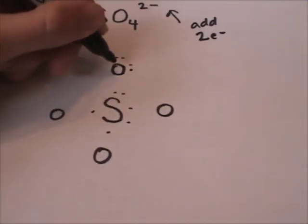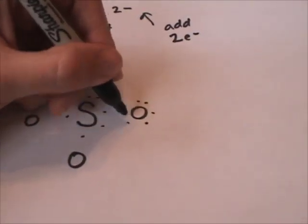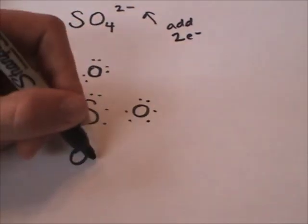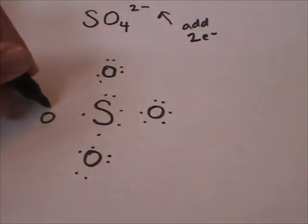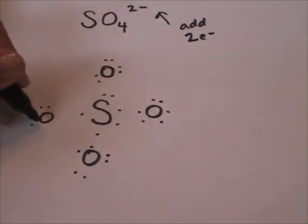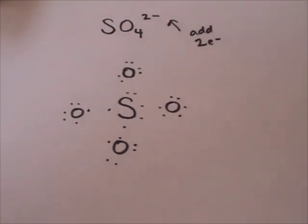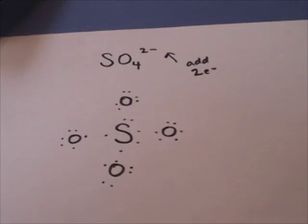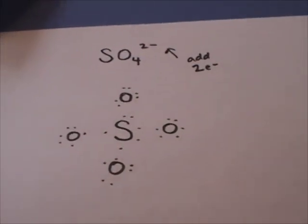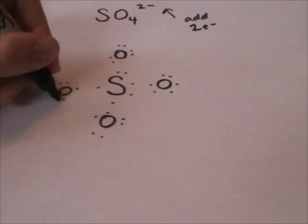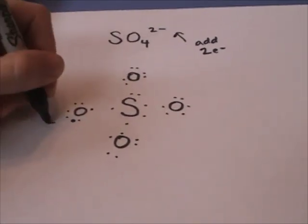Oxygen also has 6 valence electrons. And we know that we're going to have to put two extra electrons onto the most electronegative atom — oxygen. We'll give it to this one.